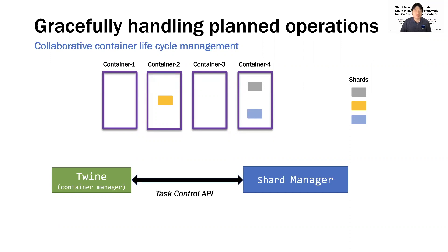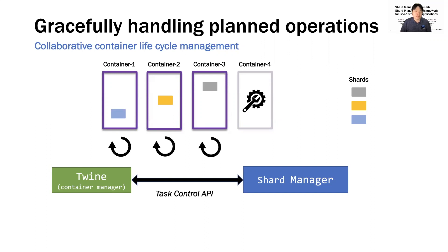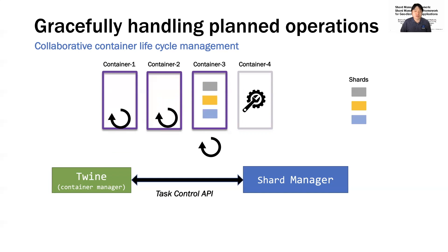Here is an example of interaction between Twine and Shard Manager for machine maintenance and container restarts as part of a software update. First, Twine learns about maintenance scheduled on container 4 and sends a notification to Shard Manager. Shard Manager then proactively moves shards away from the container before the maintenance starts. Next, Twine receives a request for restarting containers 1 to 3 and notifies Shard Manager. Shard Manager then selects a subset of containers, moves shards away from those containers, and then allows Twine to proceed. After restarting those containers, the coordination continues for the remaining containers.